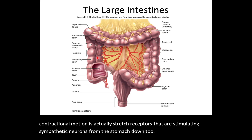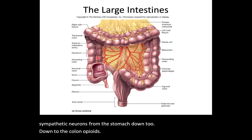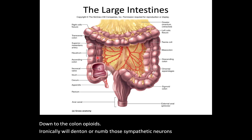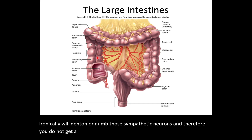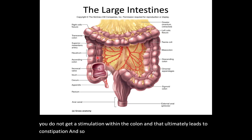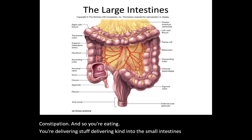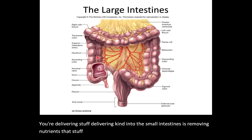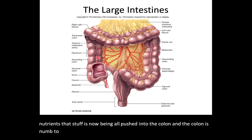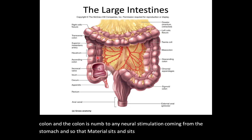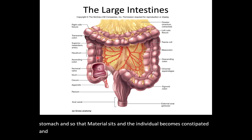What is stimulating the production of feces — what is stimulating the haustra to begin contractional motion — is actually stretch receptors stimulating sympathetic neurons from the stomach down to the colon. Opioids, ironically, will deaden or numb those sympathetic neurons, and therefore you do not get stimulation within the colon, which ultimately leads to constipation. You're eating and delivering chyme into the small intestines; the small intestines is removing nutrients; that stuff is pushed into the colon, and the colon is numb to any neural stimulation coming from the stomach. That material sits and sits and the individual becomes constipated.